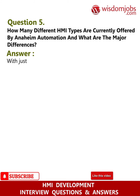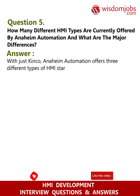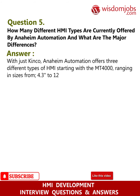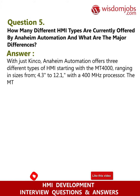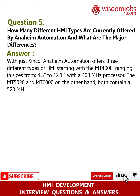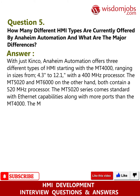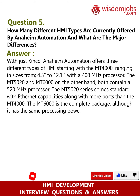Question five: How many different HMI types are currently offered by Anaheim Automation and what are the major differences? Answer: With just Kinco, Anaheim Automation offers three different types of HMI. Starting with the MT4000, ranging in sizes from 4.3 to 12.1 inches with a 400 MHz processor. The MT5020 and MT6000, on the other hand, both contain a 520 MHz processor. The MT5020 series comes standard with Ethernet capabilities along with more ports than the MT4000.